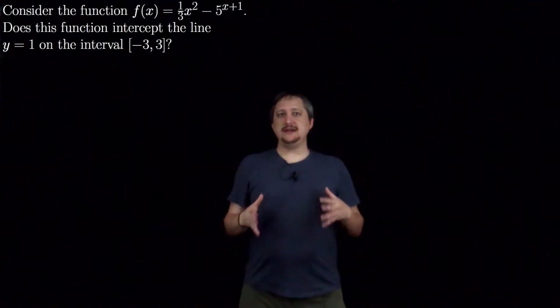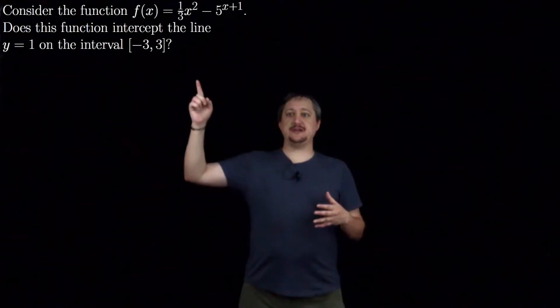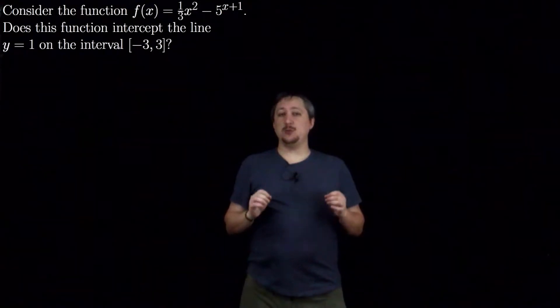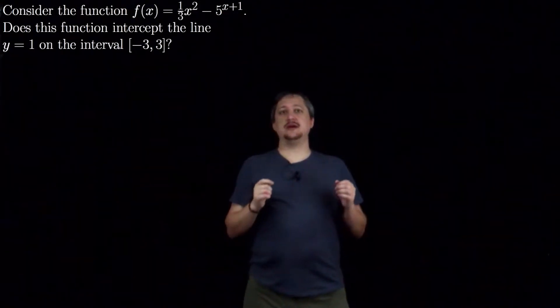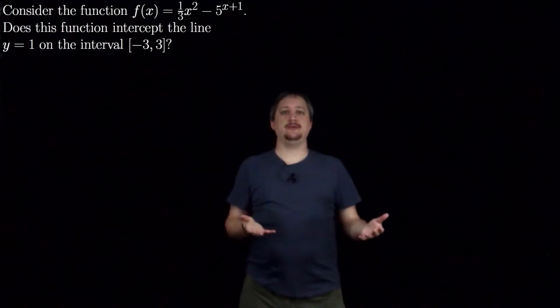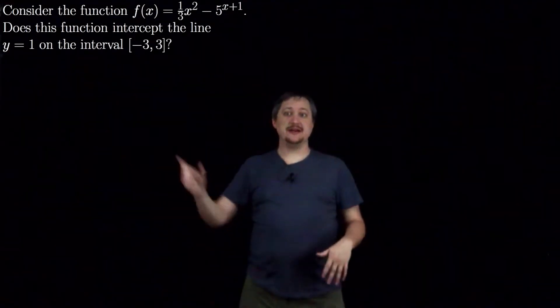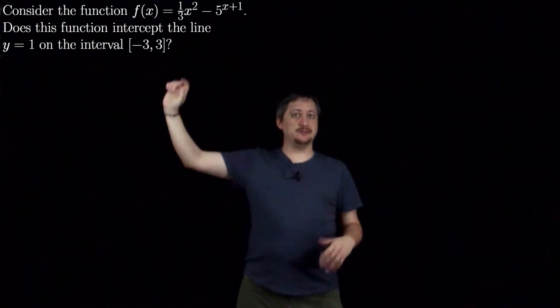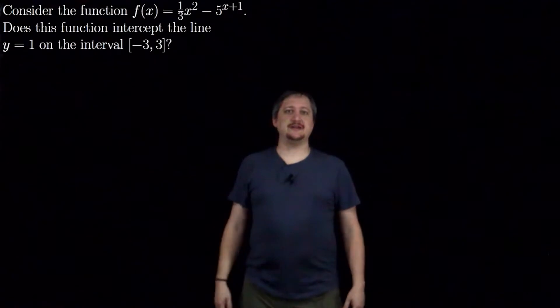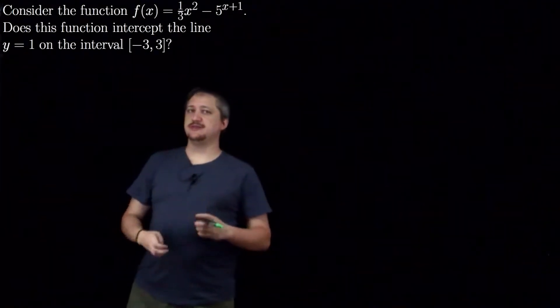So the key word or key phrase we want to look at here is this is asking specifically does this function intercept the line. It's not asking where it intercepts the line, it's not asking for a point, it's asking for existence—does this thing happen, yes or no. It doesn't ask how many times it happens or where it happens specifically. This is actually a really big distinction, this is really important.